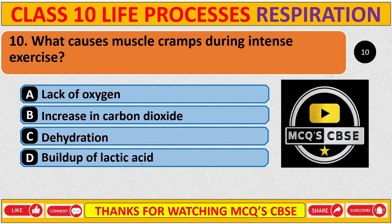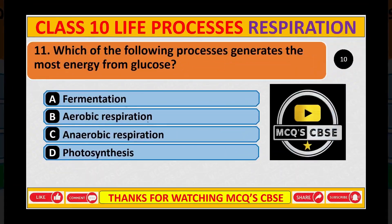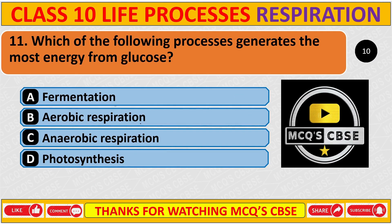Question 10: What causes muscle cramps during intense exercise? Correct answer is D: Buildup of lactic acid. Question 11: Which of the following processes generates the most energy from glucose? Correct answer is B: Aerobic respiration.